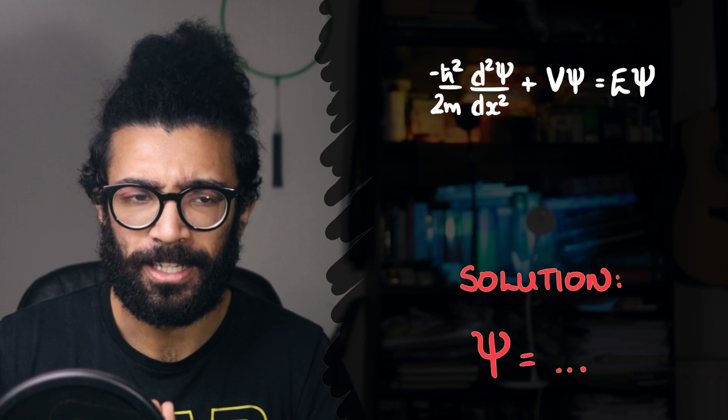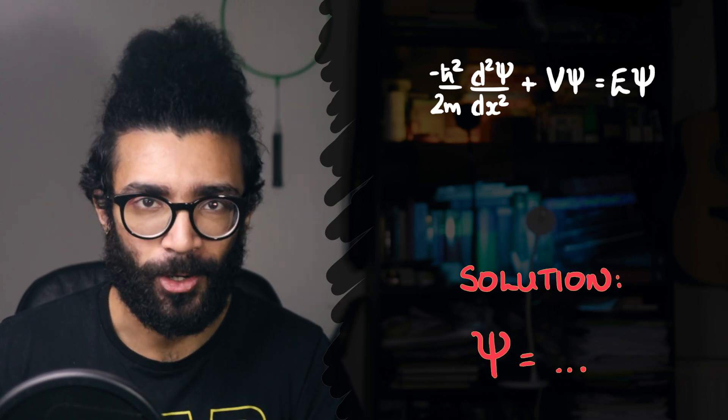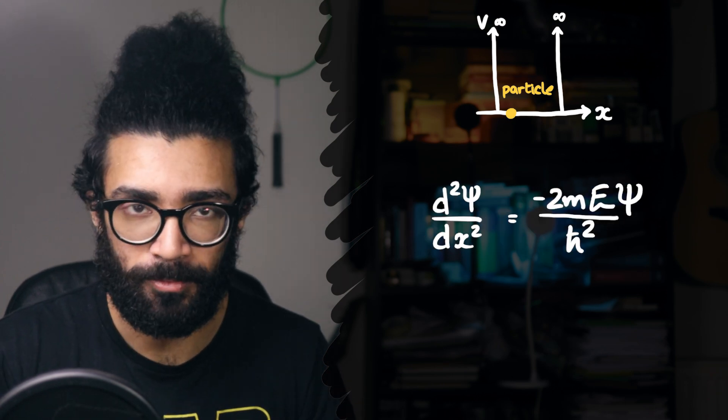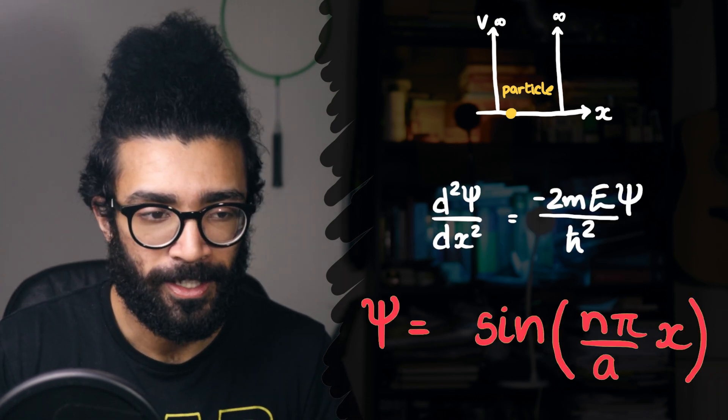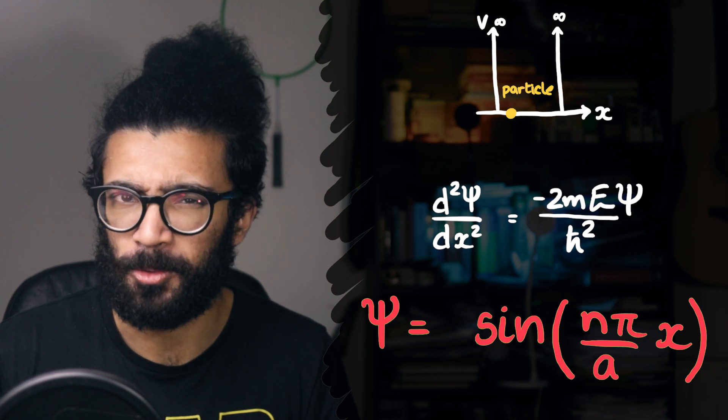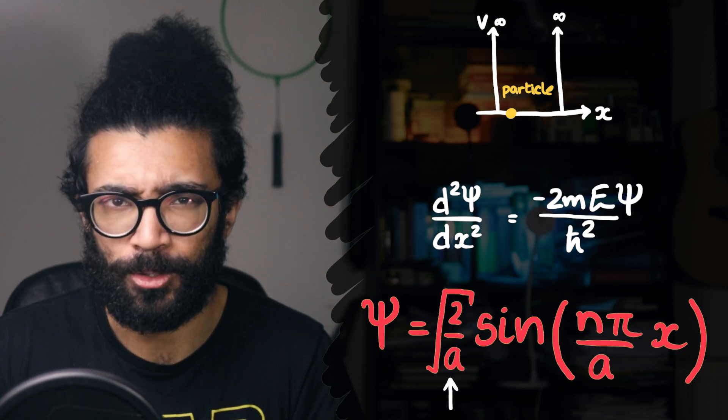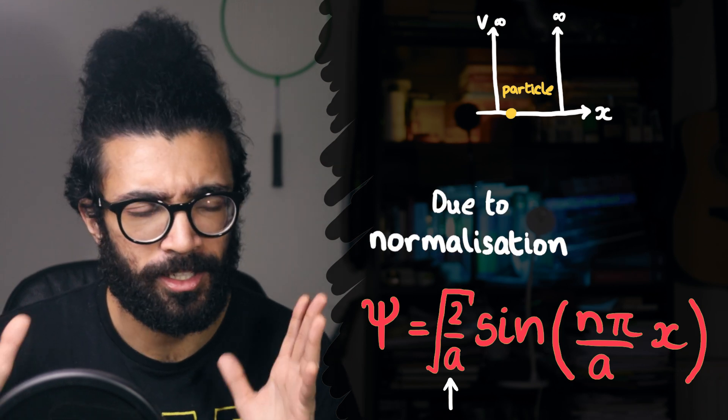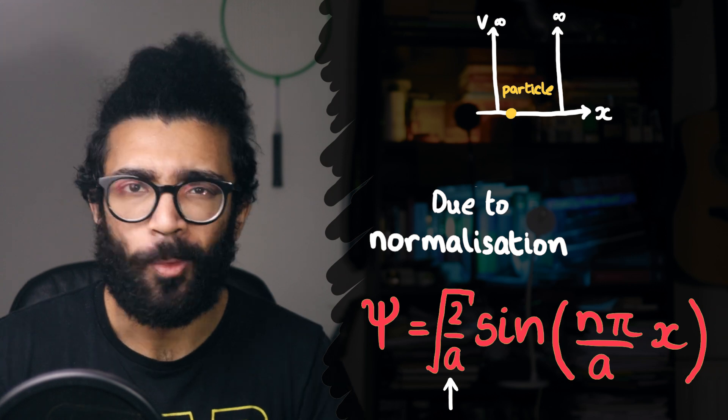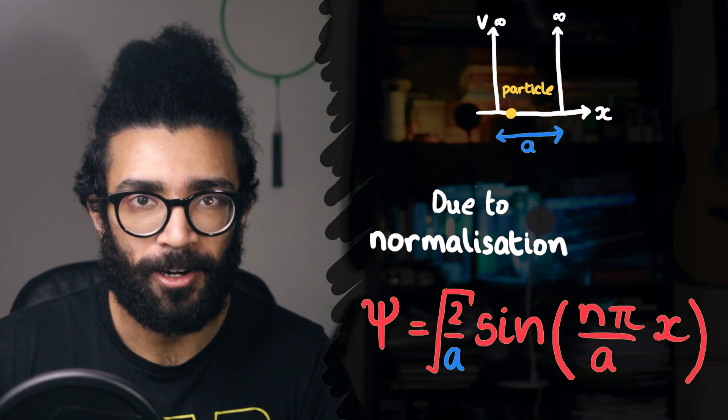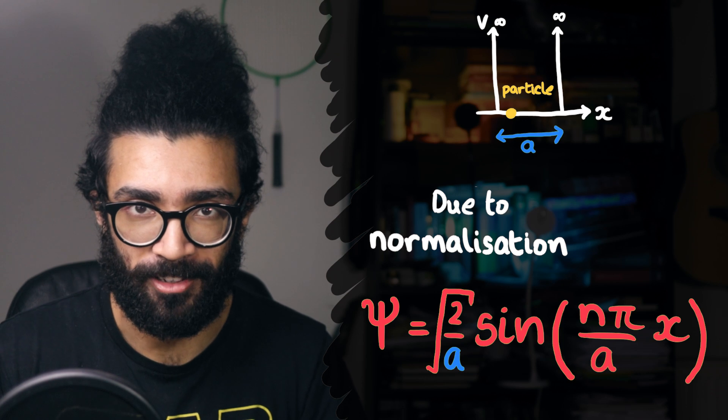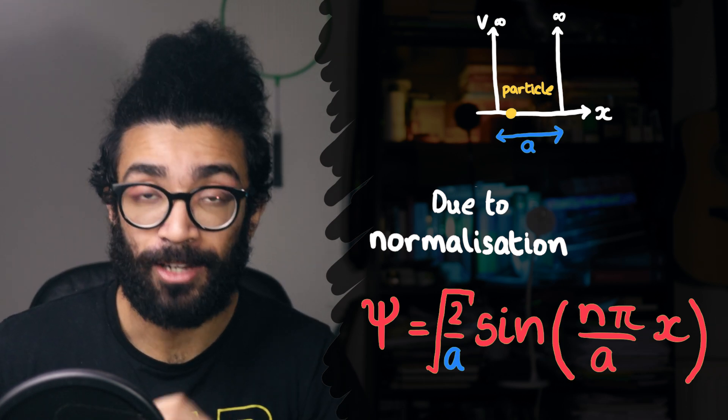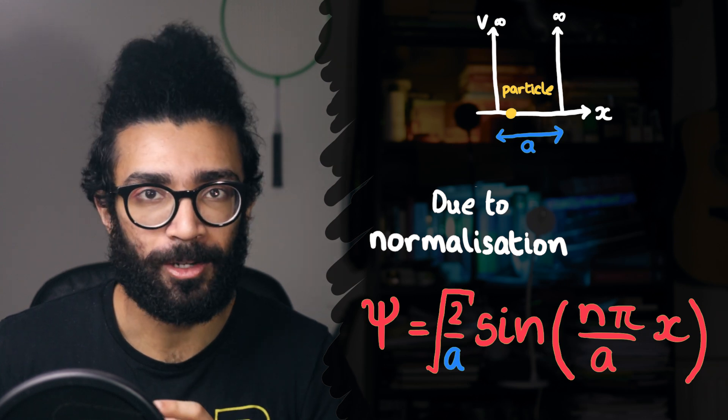But towards the end of the video, I did something that may have been slightly annoying. After showing you the method for finding the wave function for a particular basic system, I just sort of said that the solution also needed to have a factor of square root of 2 over a in it, without really justifying it. I just said that normalization was the reason for this factor, where in this case the quantity a is referring to the width of the potential well that we happen to be considering.